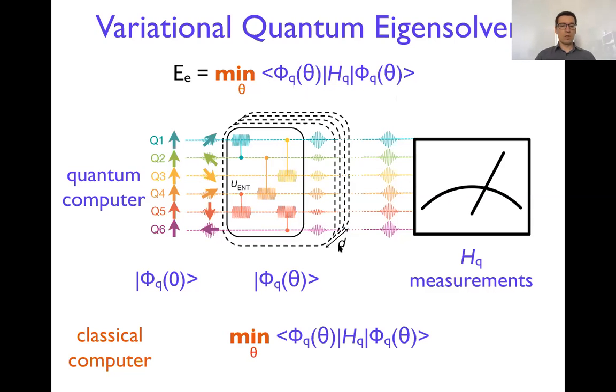The result of the expectation value is passed to the classical computer, which takes it and tries to essentially come up with the new angles of the unitary rotations. So that on the next iteration, we could lower the expectation value even more. So what essentially classical algorithm, classical part gives to the quantum one is a new trial wave function that the quantum computer needs to implement and obtain the expectation value.